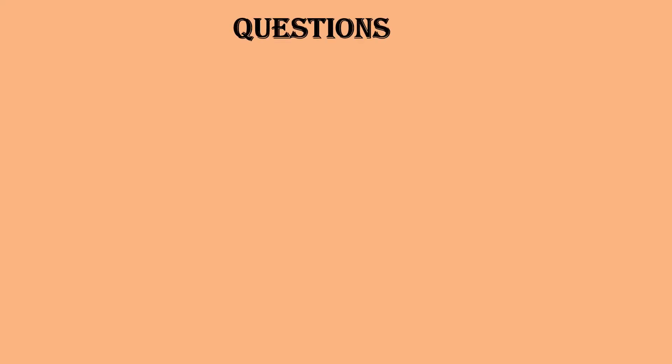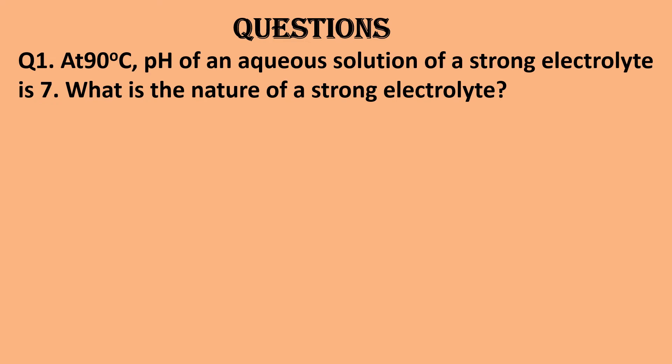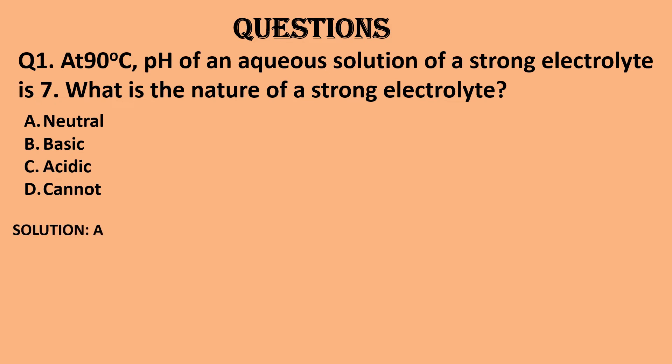Now let us solve some MCQ questions on strong, moderate, and weak electrolytes. Question 1: At 90 degrees Celsius, the pH of an aqueous solution of a strong electrolyte is 7. What is the nature of this strong electrolyte? The options are: A. Neutral, B. Basic, C. Acidic, D. Cannot be determined. A strong electrolyte dissociates completely in an aqueous solution. Since the pH given is 7, the electrolyte is neutral. The solution is neutral due to uniform distribution of positive and negative ions. So the correct option is A. Neutral.